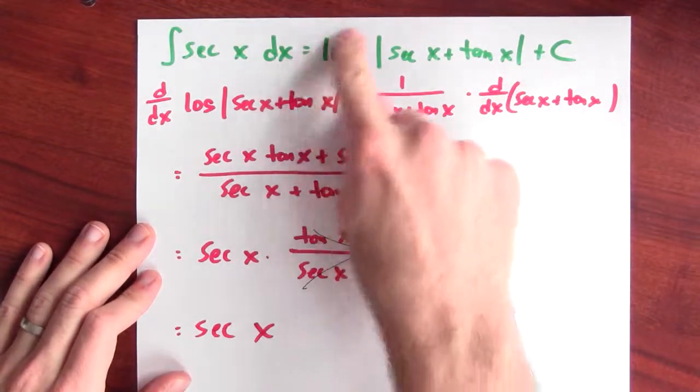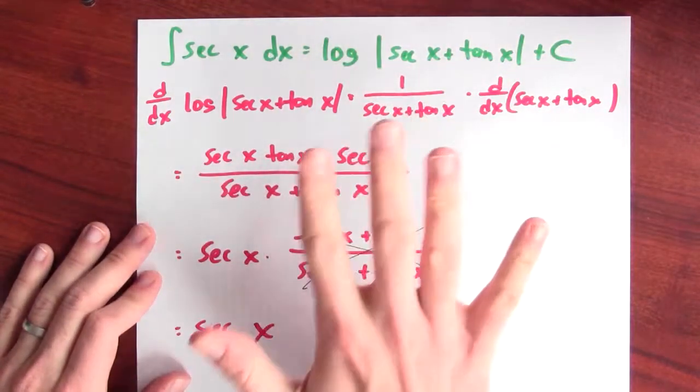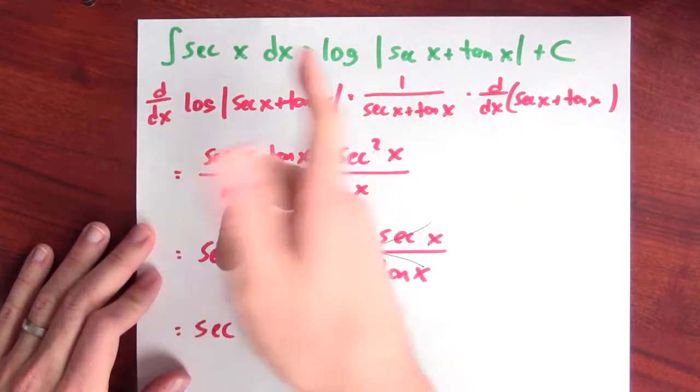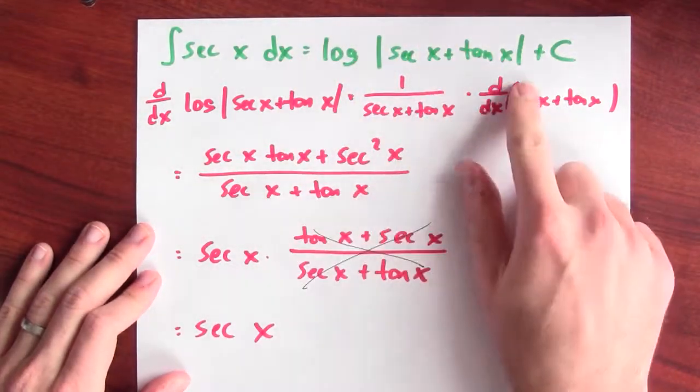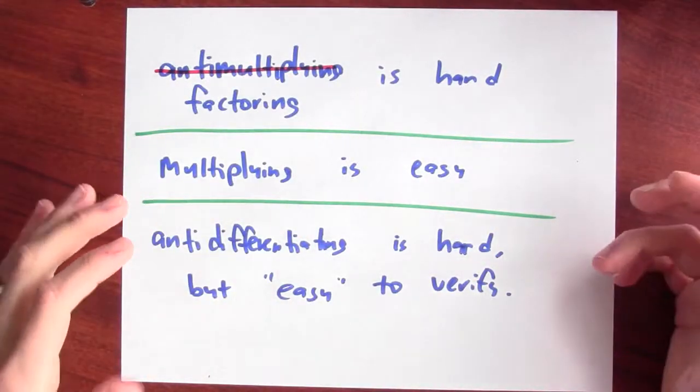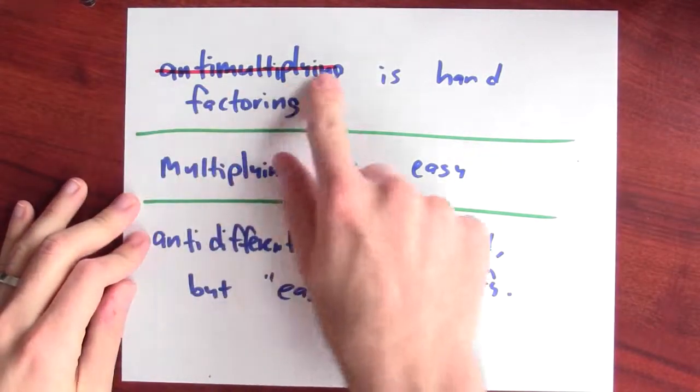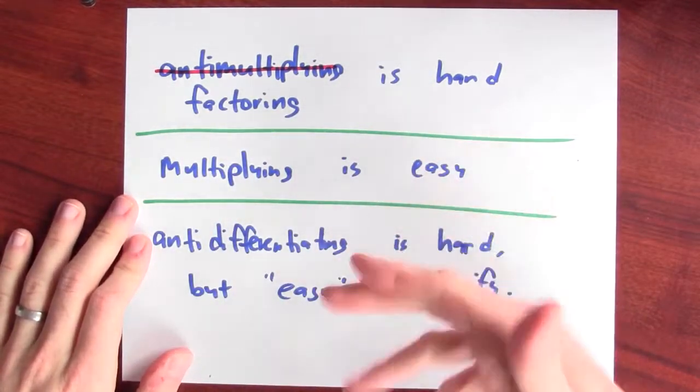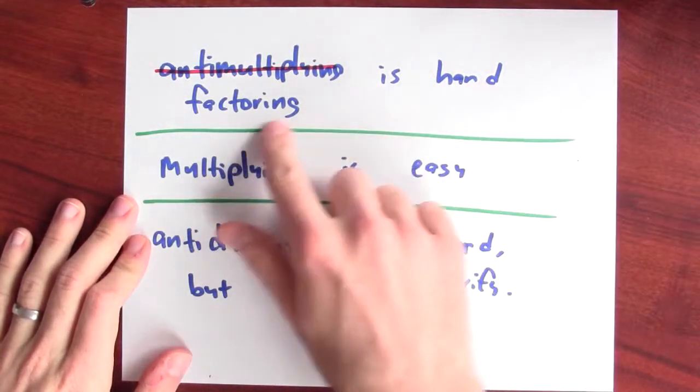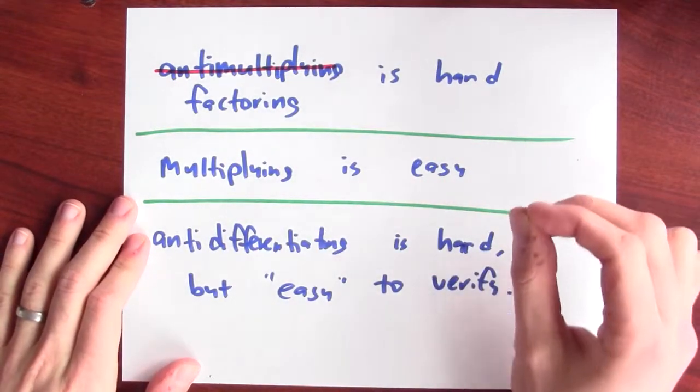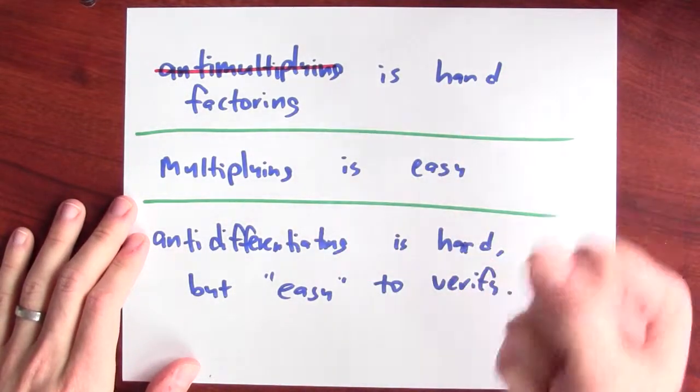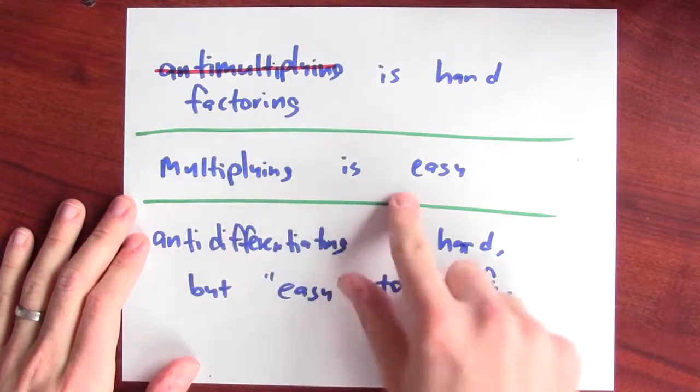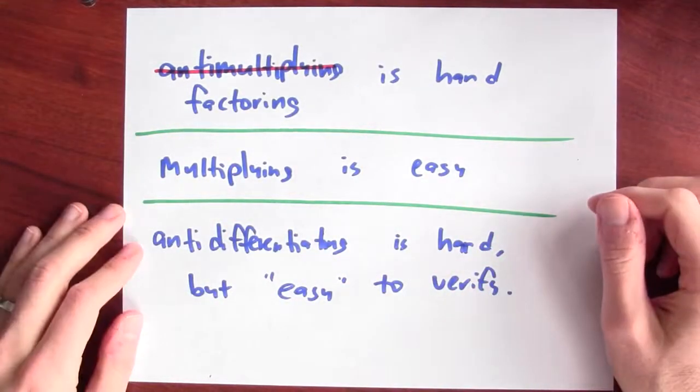The derivative of this is secant x and consequently the anti-derivative of secant x is this. This is really akin to anti-multiplying, to factoring. If you remember our experience multiplying and anti-multiplying or factoring numbers, factoring was hard. I had to do trial division to figure out how to factor a number. But once I had that factorization in hand, then checking it was easy. Multiplying is something that you can do.